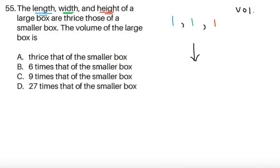Item 55. Length, width, and height of a large box are thrice those of a smaller box. The volume of the large box is... some number of times with respect to the smaller box. By the way, the length and width and height are not given, so they're technically variables. We can try to implement the trick that we can substitute values since nothing is given and there aren't really restrictions as to what these should be.